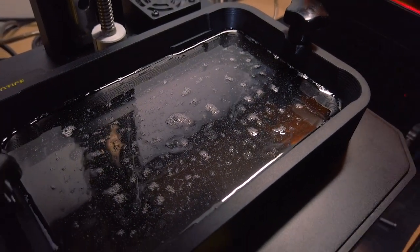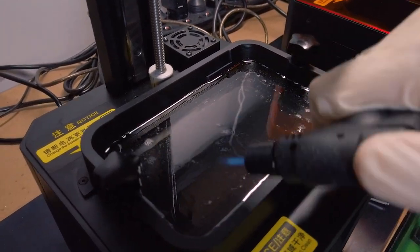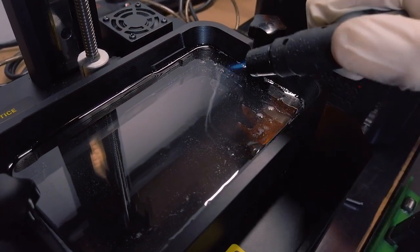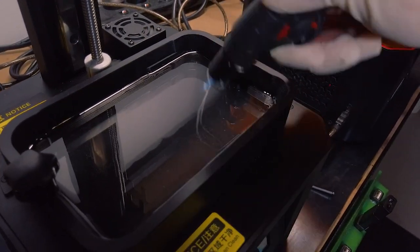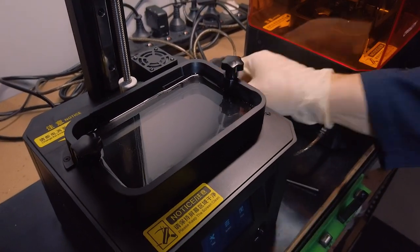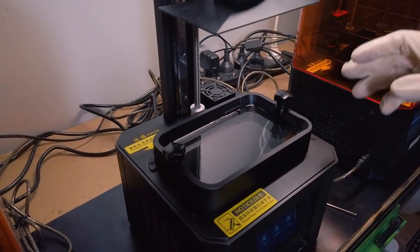So to remove the bubbles you can use a source of heat and that will get rid of the bubbles on the surface. Using a strong source of heat on the bubbles causes them to expand and pop. This also helps to warm up the resin. The warmer the resin the less viscous it is.